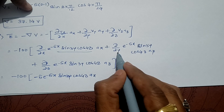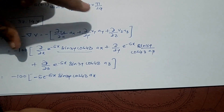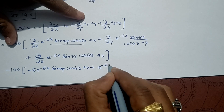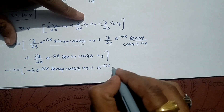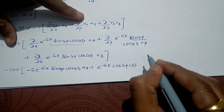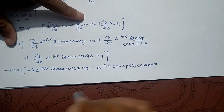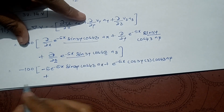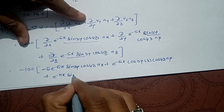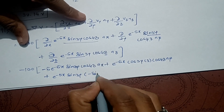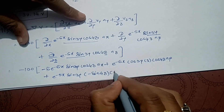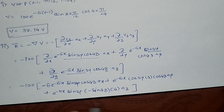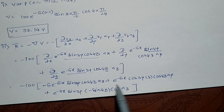Differentiating with respect to y: e^(-5x) and cos(4z) are constant, so sin(3y) differentiates to 3·cos(3y). For the z-direction: e^(-5x) and sin(3y) are constant, and differentiating cos(4z) gives minus sin(4z) multiplied by 4. This gives us the electric field intensity components along x, y, and z directions.